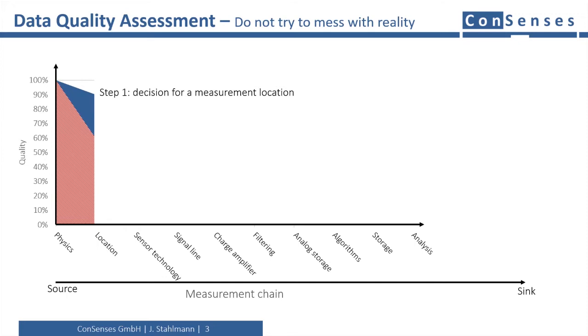Our clear recommendation is: do not mix this up. Simply make another chart where the caption of the y-axis is robustness or costs.